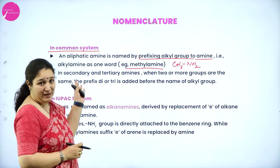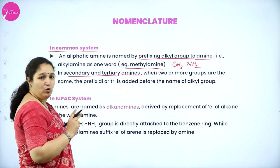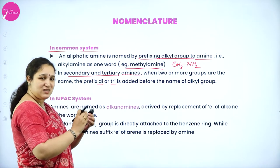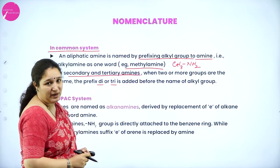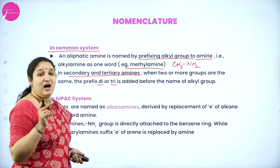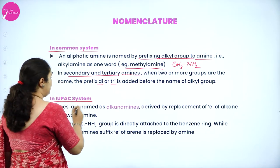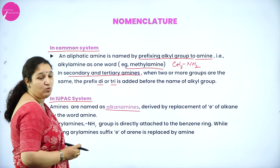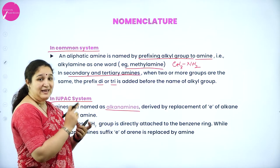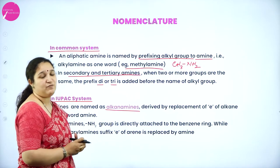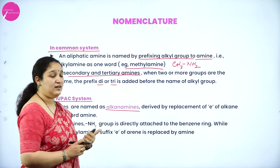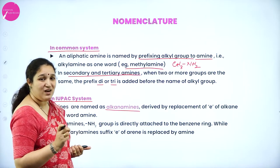For primary amines, when two or more groups are the same, we use the prefix di or tri, and we write the alkyl groups then the word amine for both secondary and tertiary. In the IUPAC system, it is named as alkylamines — you take the parent chain alkane, drop the 'e', and add the suffix 'amine'. So alkylamines is the way of writing the IUPAC name.